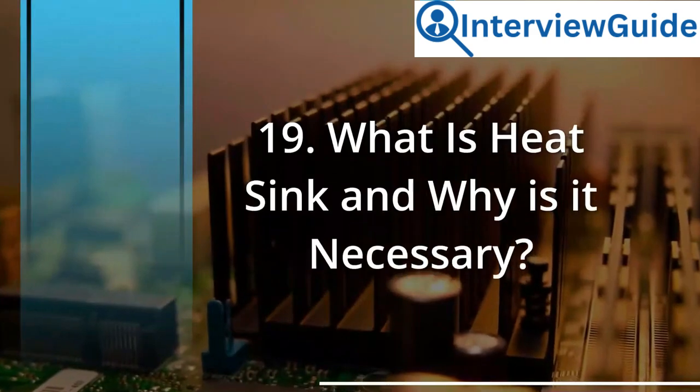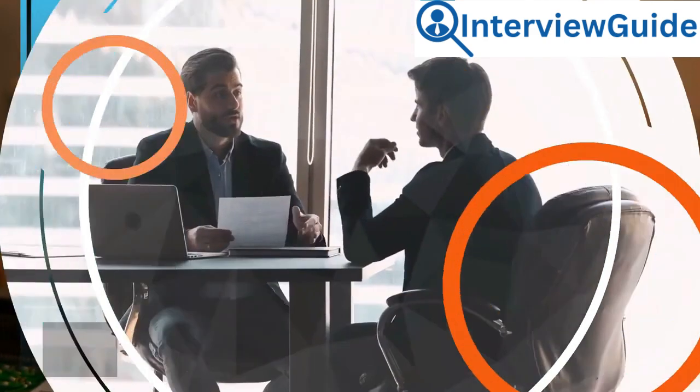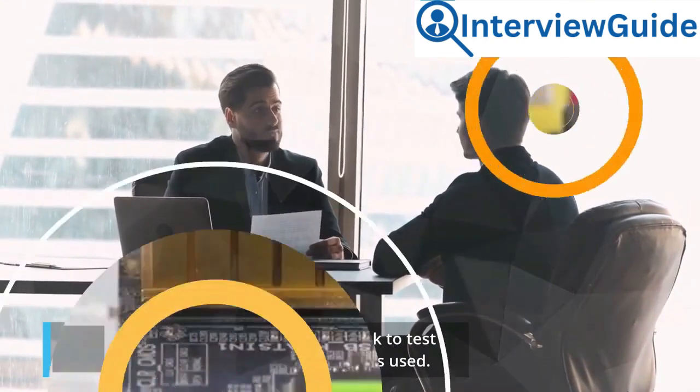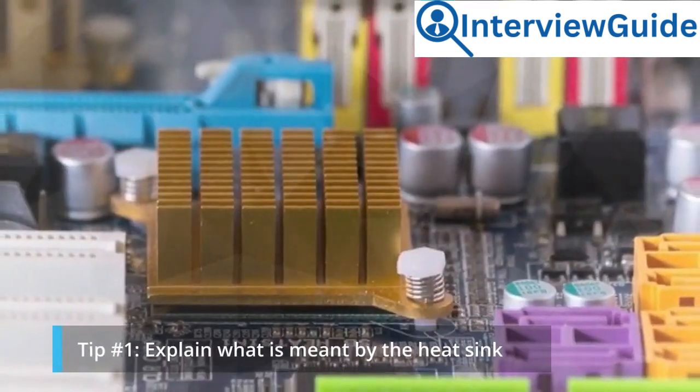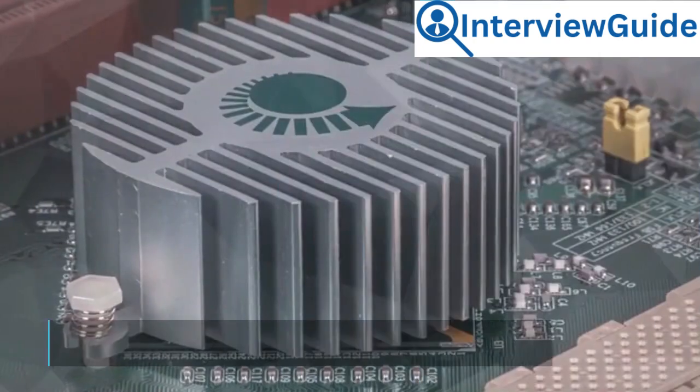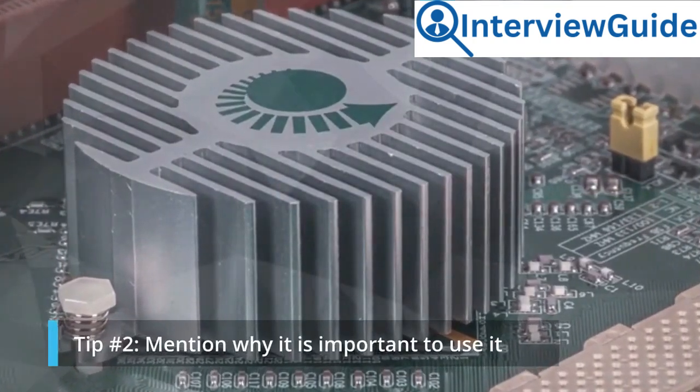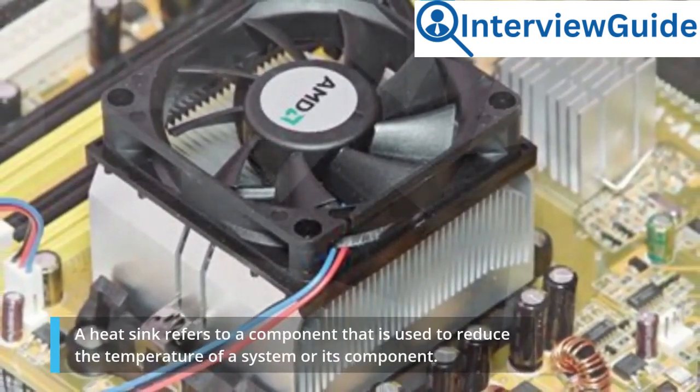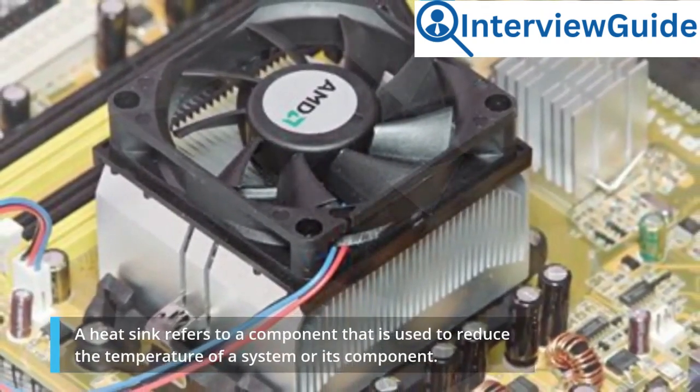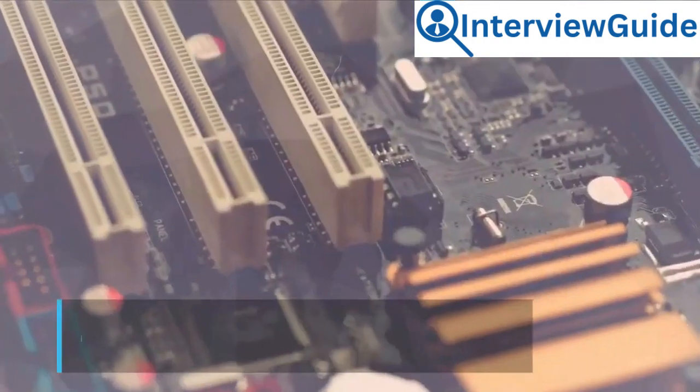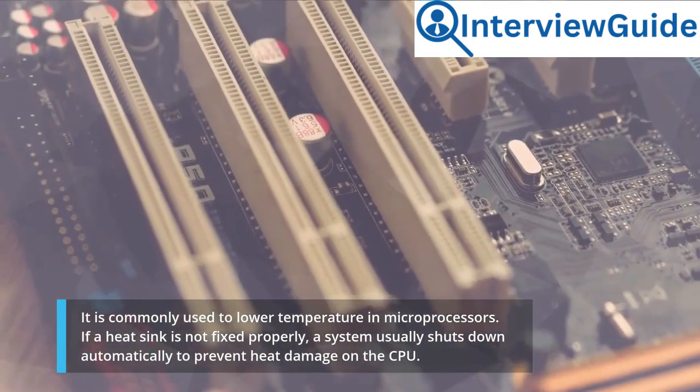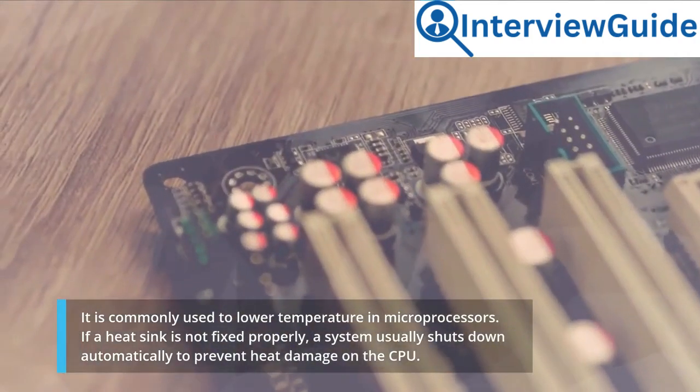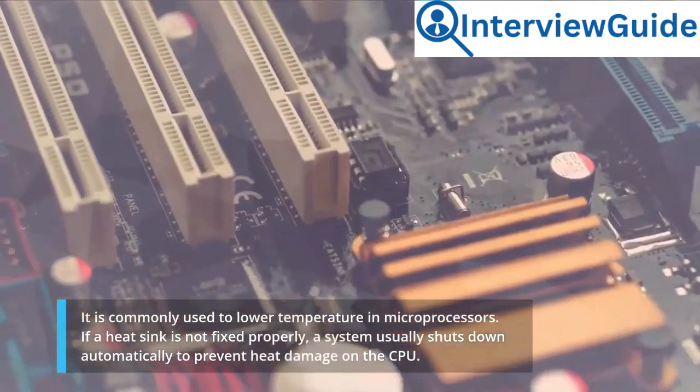Question 19: What is heat sink and why is it necessary? The interviewer asks you about heat sink to test whether you know what it is and why it is used. Tip number 1: explain what is meant by the heat sink. Tip number 2: mention why it is important to use it. Sample answer: A heat sink refers to a component that is used to reduce the temperature of a system or its component. It is commonly used to lower temperature in microprocessors. If a heat sink is not fixed properly, a system usually shuts down automatically to prevent heat damage on the CPU.